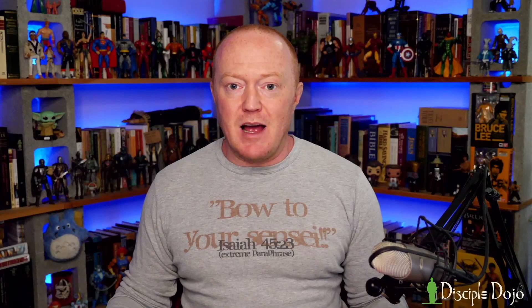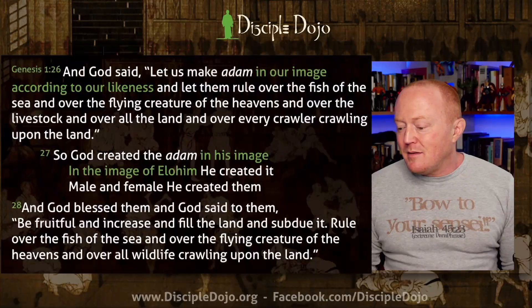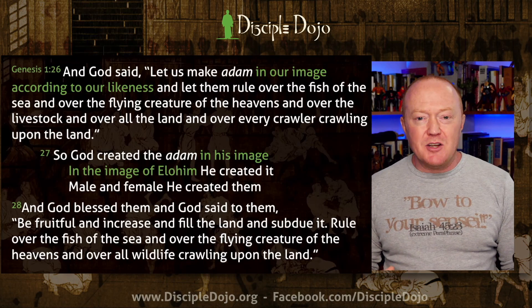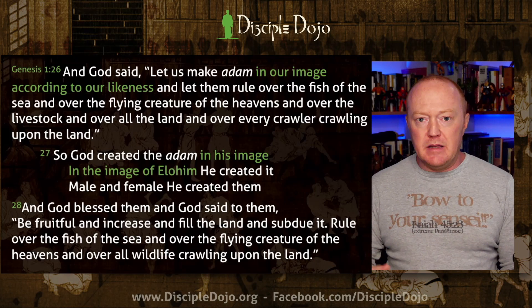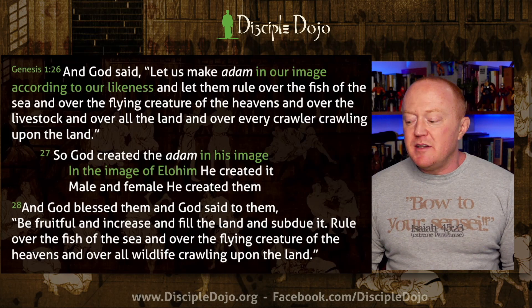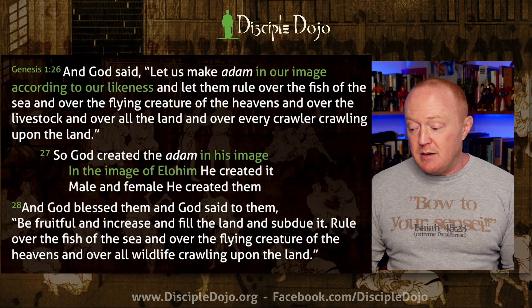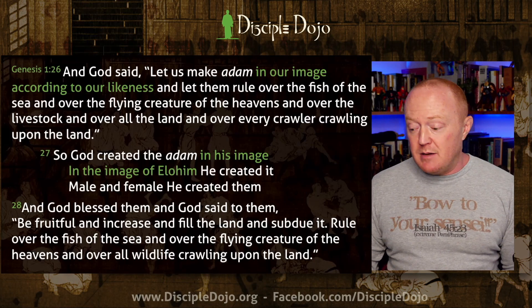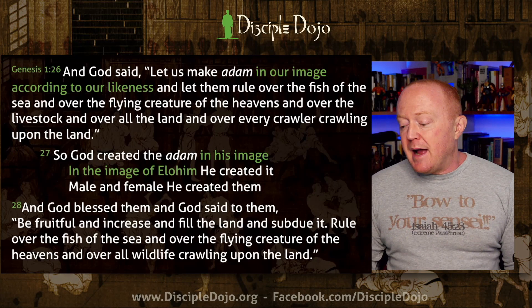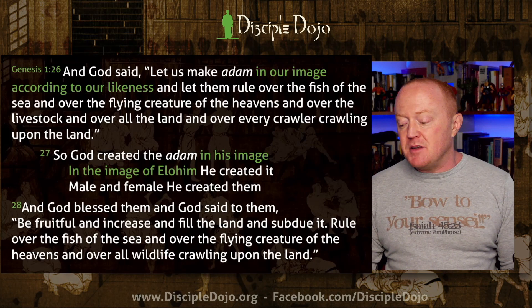Now, with that background in place — what it was like in the minds of ancient Mesopotamians and Egyptians — listen to how scripture describes the image of God in Genesis 1:26. This is my own woodenly literal translation: 'And God said, let us make adam in our image, according to our likeness, and let them rule over the fish of the sea and over the flying creature of the heavens and over the livestock and over all the land.' So God created the adam in his image — in the image of Elohim he created it — male and female he created them.